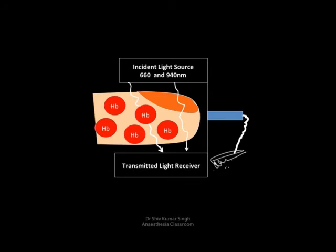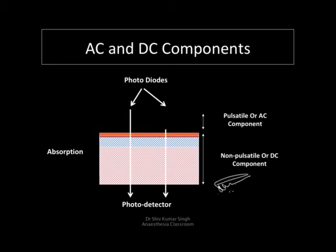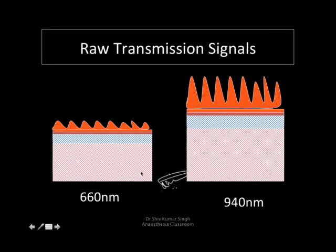In a pulse oximeter, there is a probe placed across the thumb or fingers. On one side we have the source of light, which transmits at 660 and 940 nanometers, and on the other side is the receiver. This information is then fed to the pulse oximeter. Light passes through both pulsatile and non-pulsatile components of the finger, and we have raw transmission measurements at 660 nanometers and 940 nanometers.